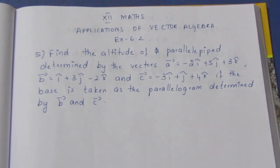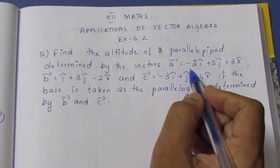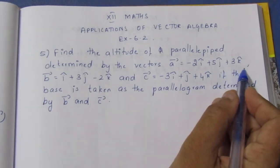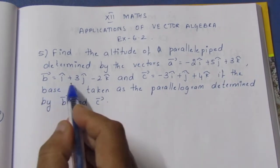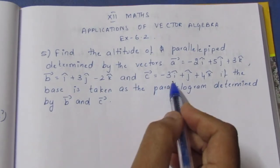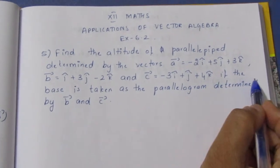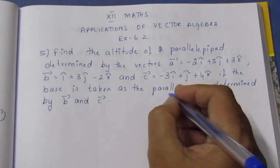Find the altitude of a parallelepiped determined by the vectors A = -2i + 5j + 3k, B = i + 3j - 2k, and C = -3i + j + 4k, if the base is taken as the parallelogram determined by B and C.